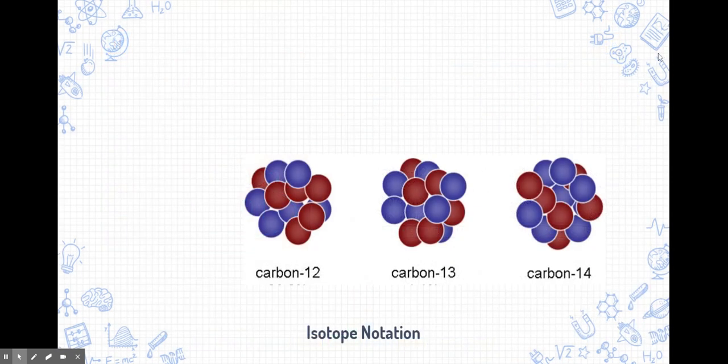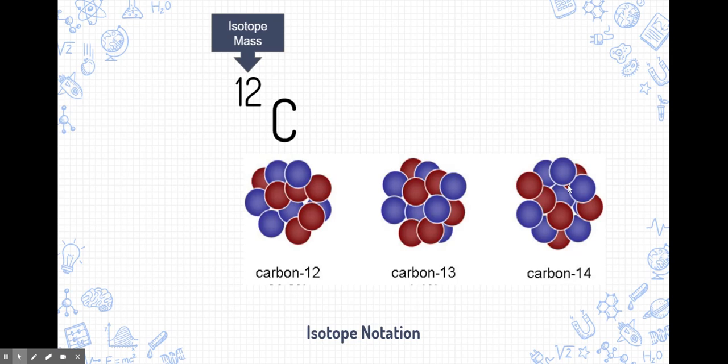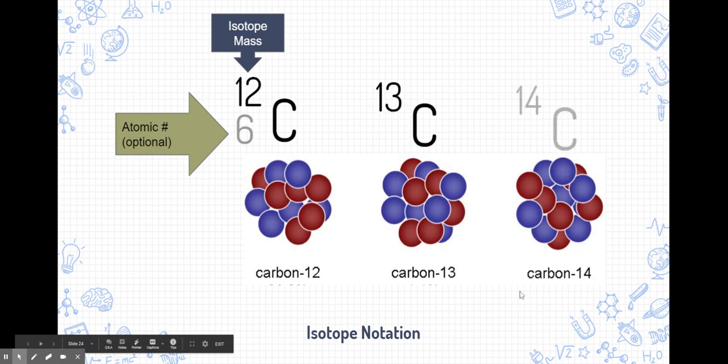So let's talk about how we symbolize these on our paper and in textbooks. Isotope notation is written like this. Let's start with carbon-12. Carbon-12 can be written with the symbol C and a little 12 of the upper left-hand corner. The little 12 represents the mass of that isotope of carbon. Now, sometimes you do see a number on the bottom left-hand side. That's just the atomic number, which for carbon, it's six. This is really an optional number. And the reason it's optional is because it will always be six. For the other carbons, however, carbon-13 and carbon-14, the masses might change, even though the atomic number might be the same.